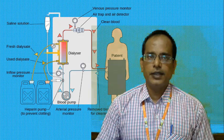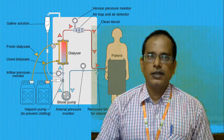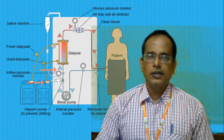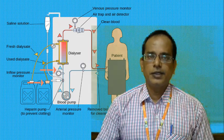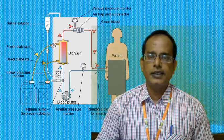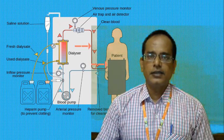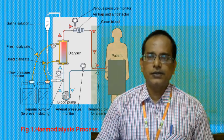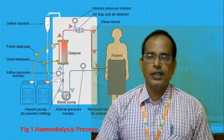The dialyser has an exchange dialyser chamber containing a semi-permeable membrane. Dialysate and distilled water are added to the chamber. With the help of osmosis, the blood is purified and then returned to the vein — this is called the hemodialysis process.